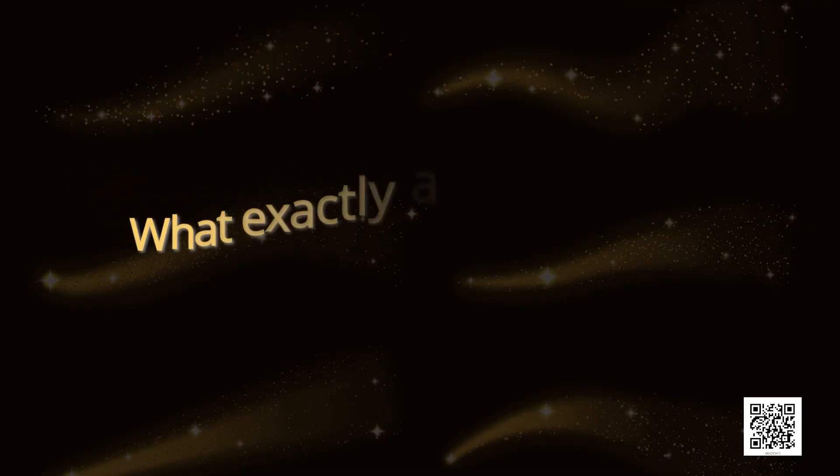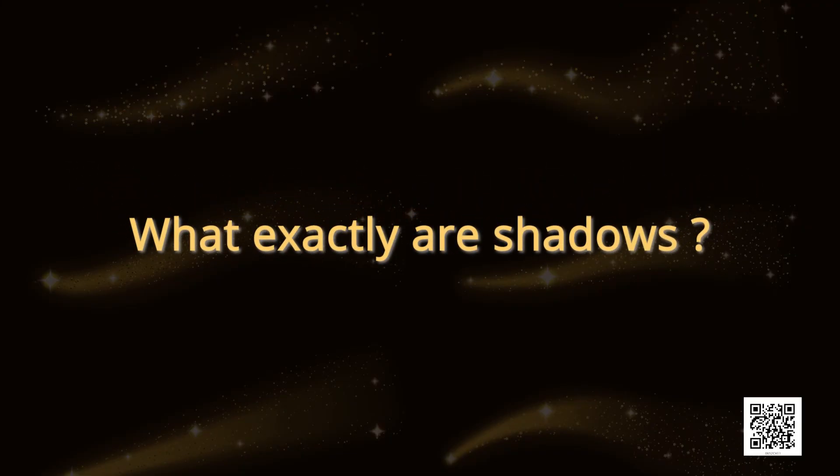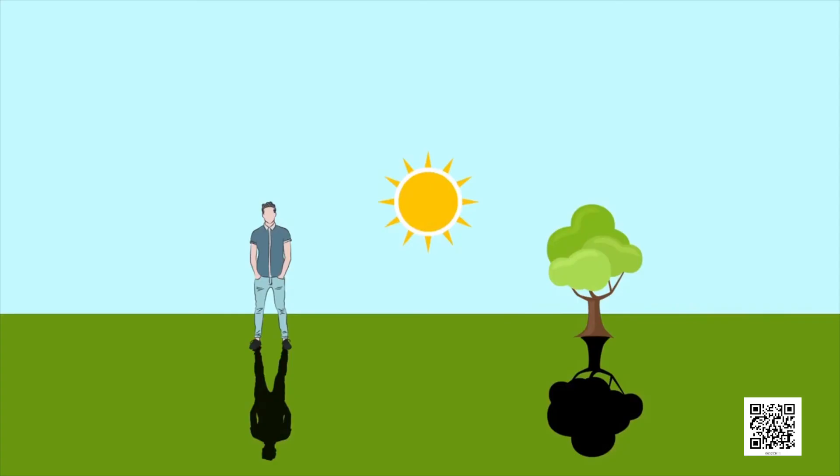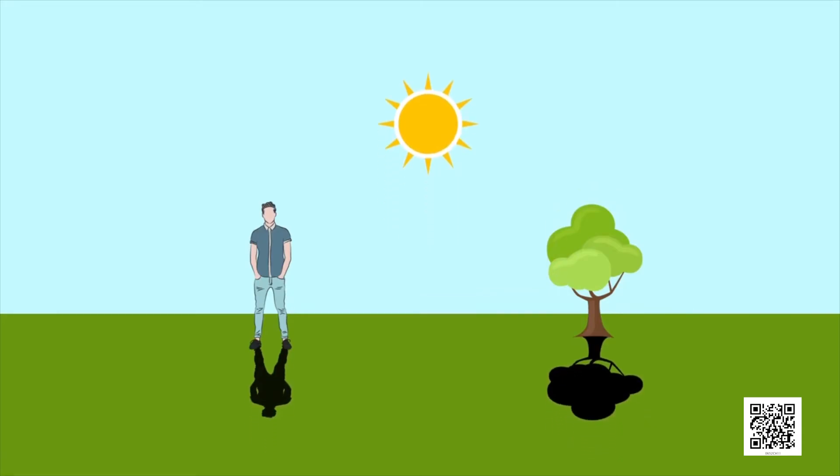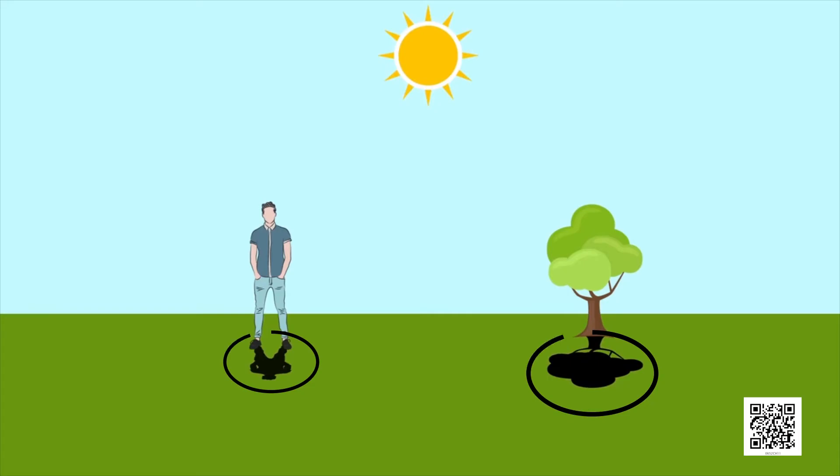What exactly are shadows? To understand about shadows, let us perform an activity. One by one, hold each of the opaque objects in the sunlight slightly above the ground. What do you see on the ground? You know that the dark patch formed by each on the ground is due to its shadow.